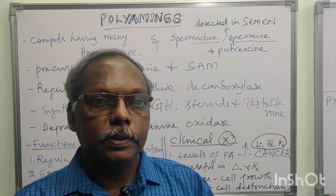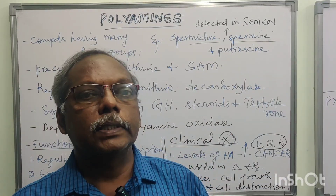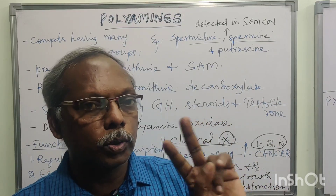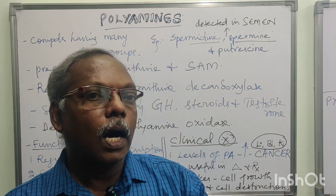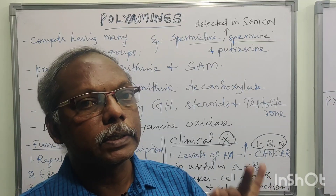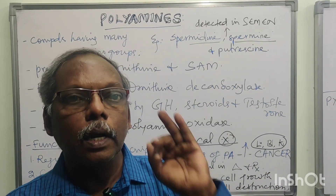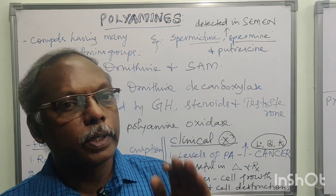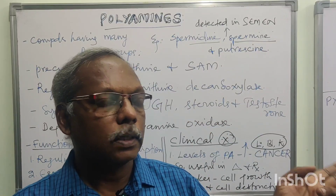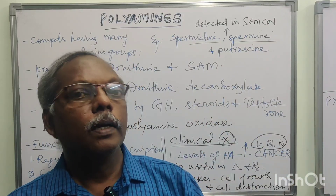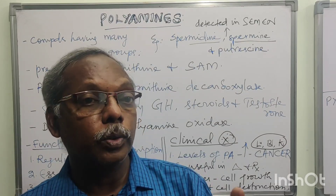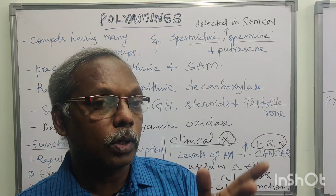What are the precursors — where are polyamines synthesized from? Two compounds, both amino acids: one is ornithine and another one is methionine. Methionine is a sulfur-containing amino acid. So the precursors are ornithine and methionine — specifically SAM, that is S-adenosylmethionine. These two are the precursors.